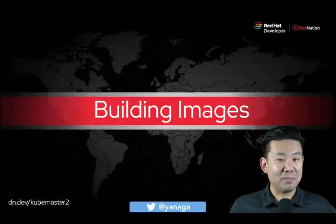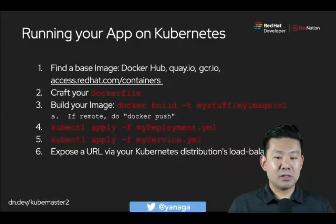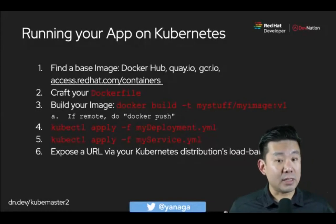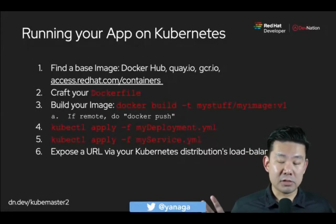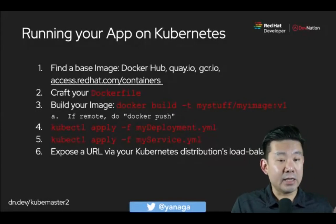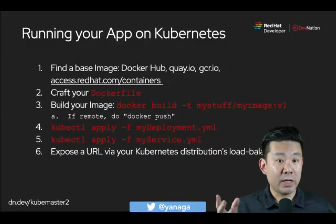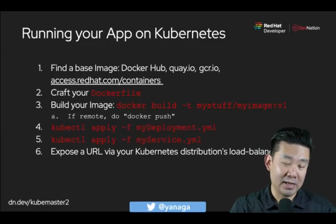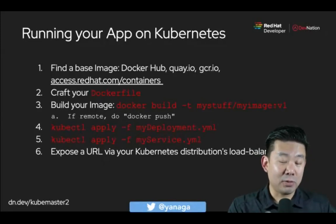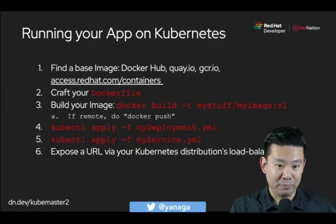Let's go back to building images. First, Kubernetes runs container images and these must be available somewhere. You could use Docker Hub, though many people are avoiding it after they updated policies to expire images after six months. Good free public alternatives are Quay.io — the one I'm using — or the Google Container Registry (GCR). We can also have Red Hat's private registry.